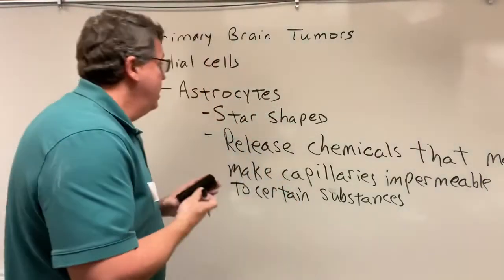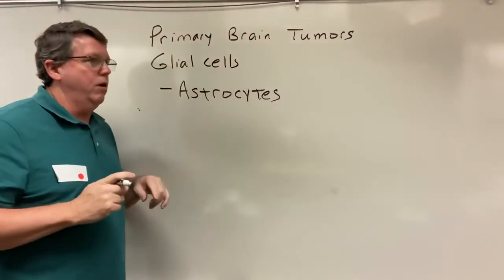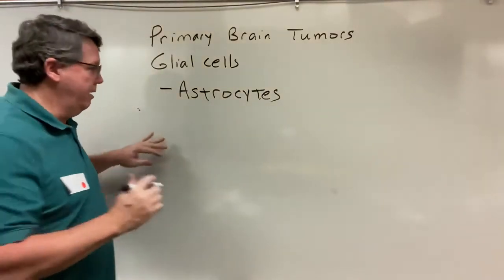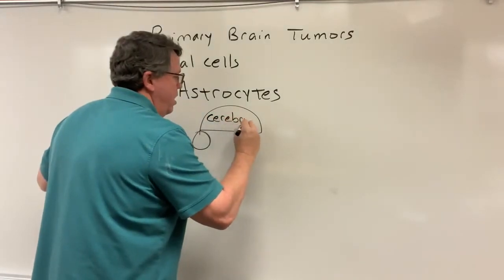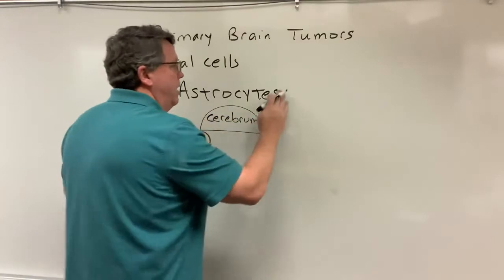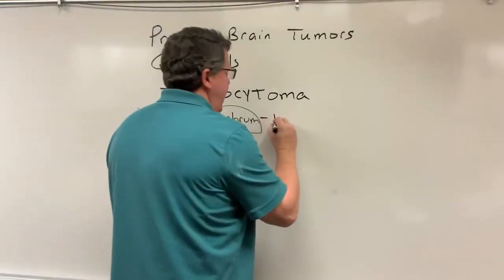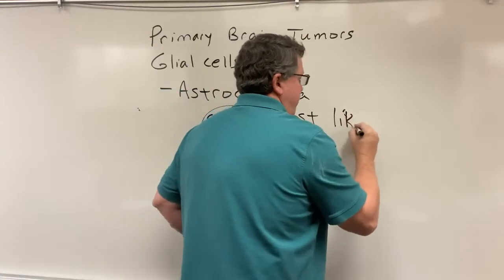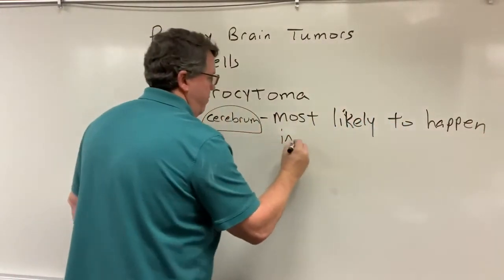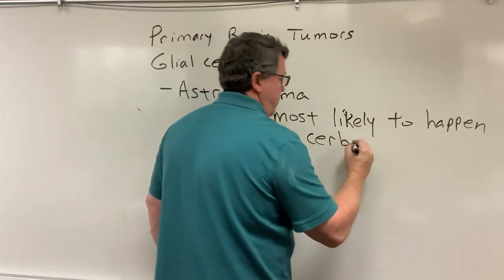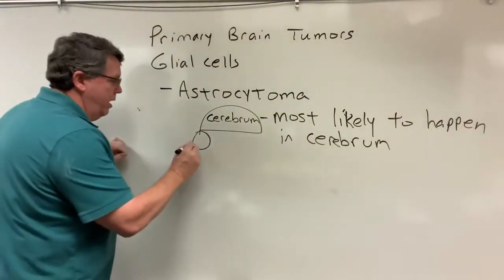These tumors usually happen in adults in something called the cerebrum, which is the big part of the brain. You basically have two parts: the cerebrum and the cerebellum. In adults, if we get a tumor of the astrocytes — called an astrocytoma — it's most likely to happen in the cerebrum. In children, it can be either in the cerebrum or in the cerebellum.